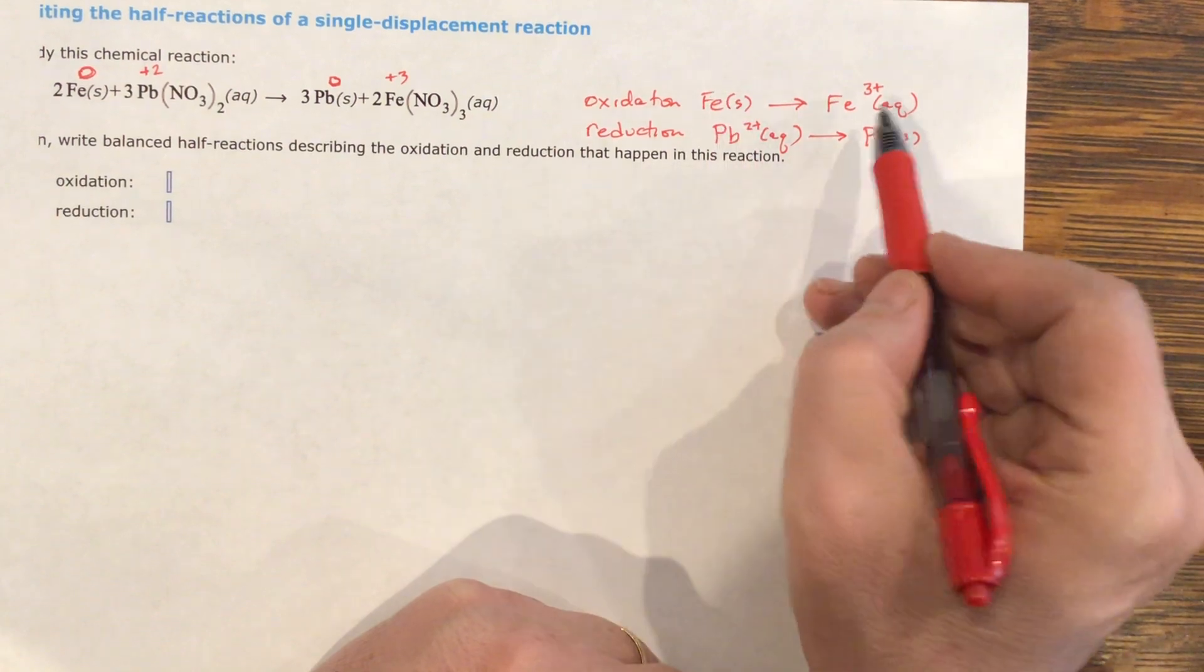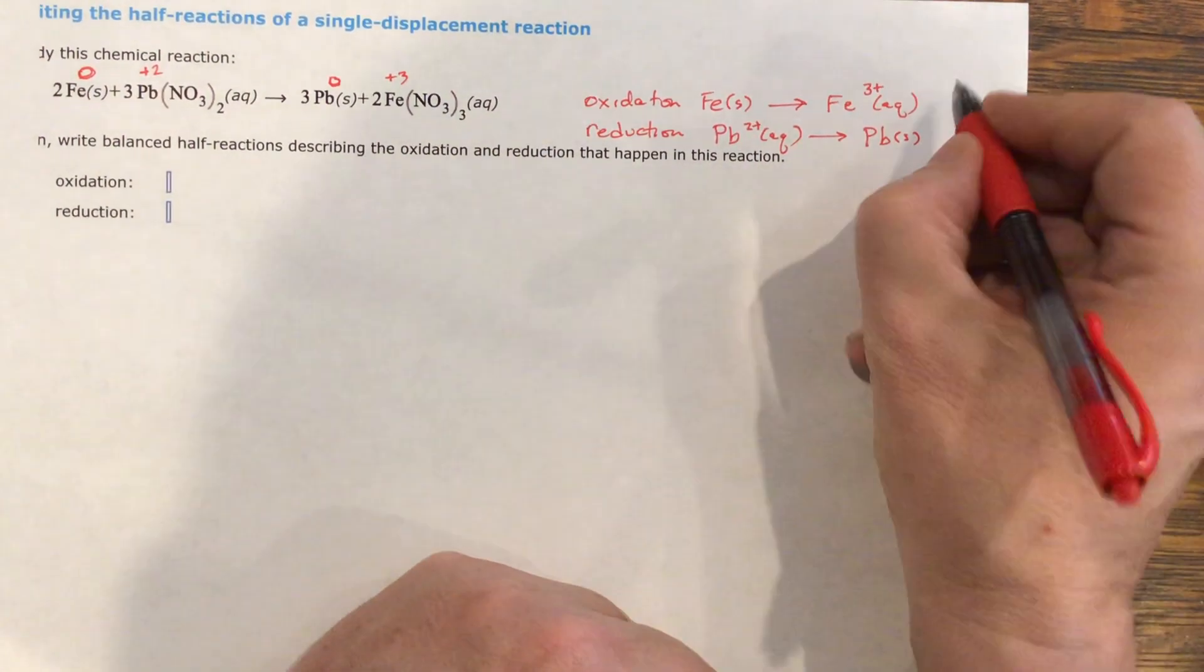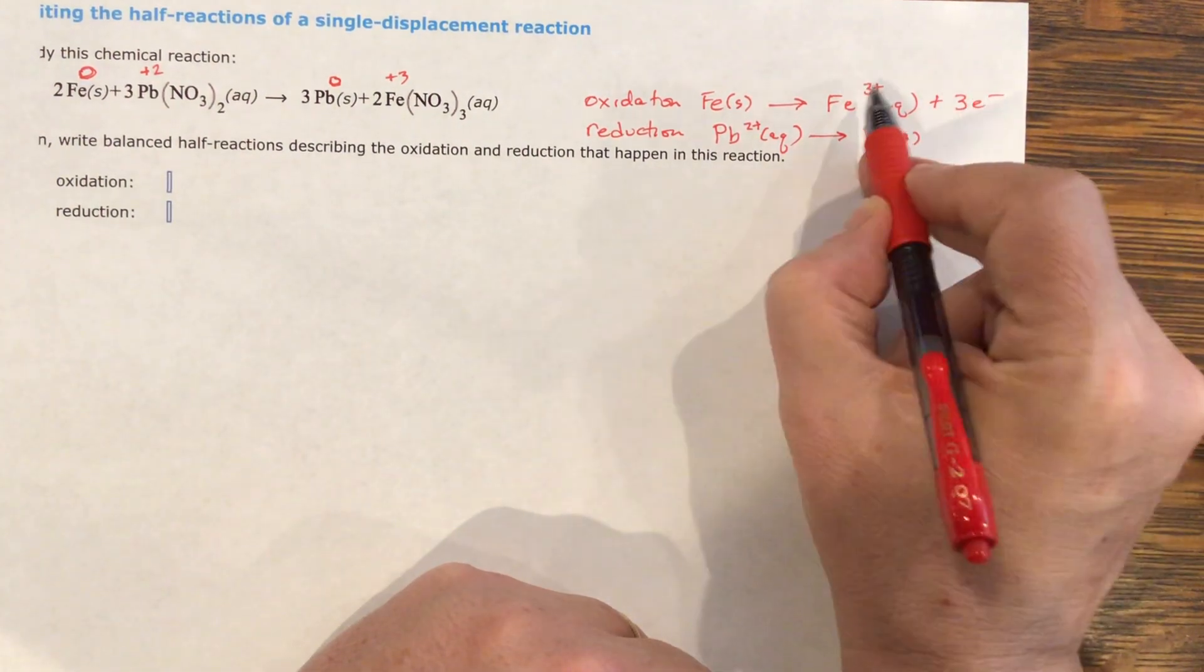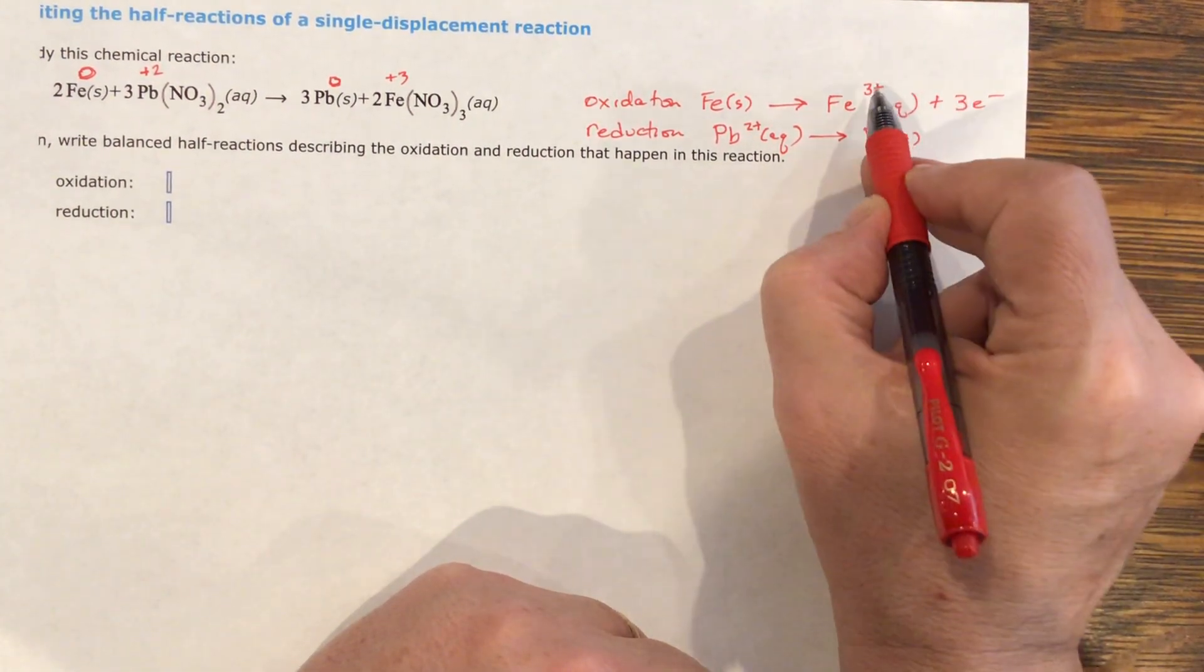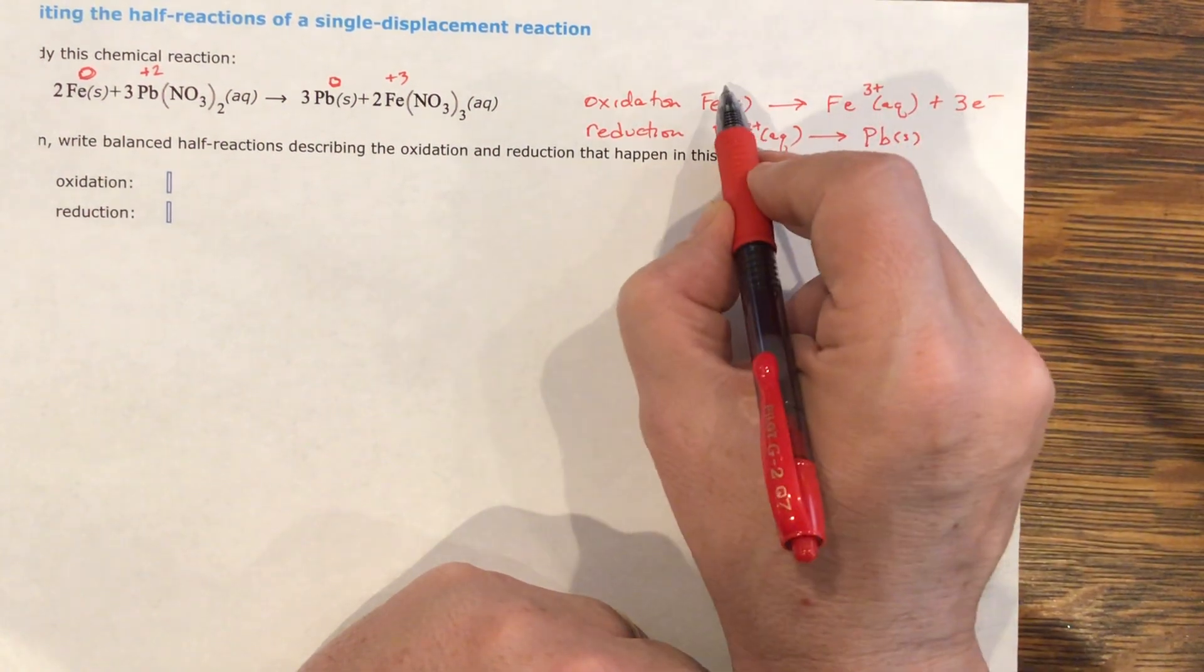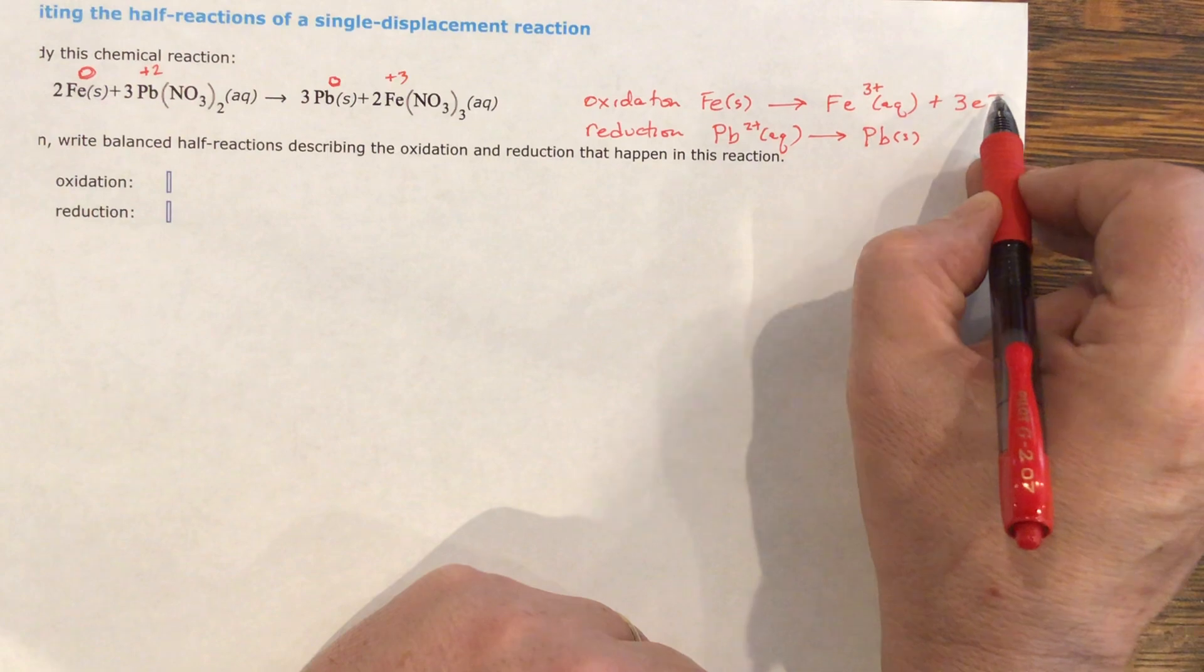You see, I want it to equal zero. So 3+ plus three electrons will balance it. This will go to zero because positive three and negative three are both together as zero, and this is zero. So the three electrons goes on this side.